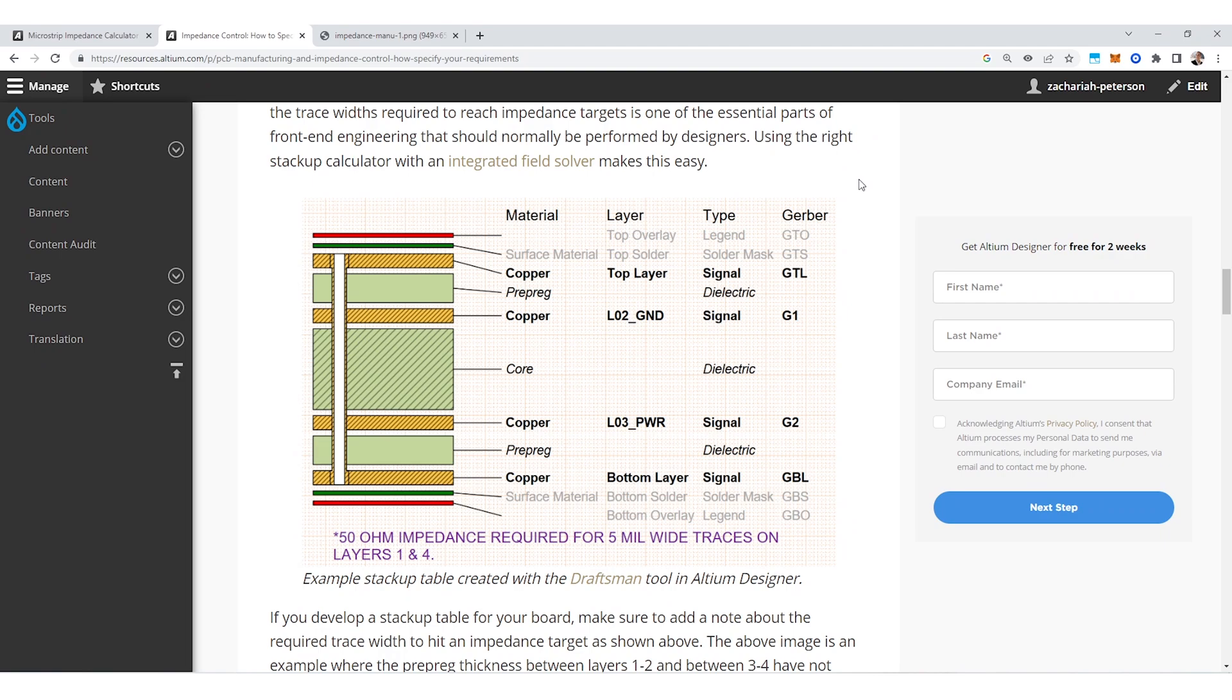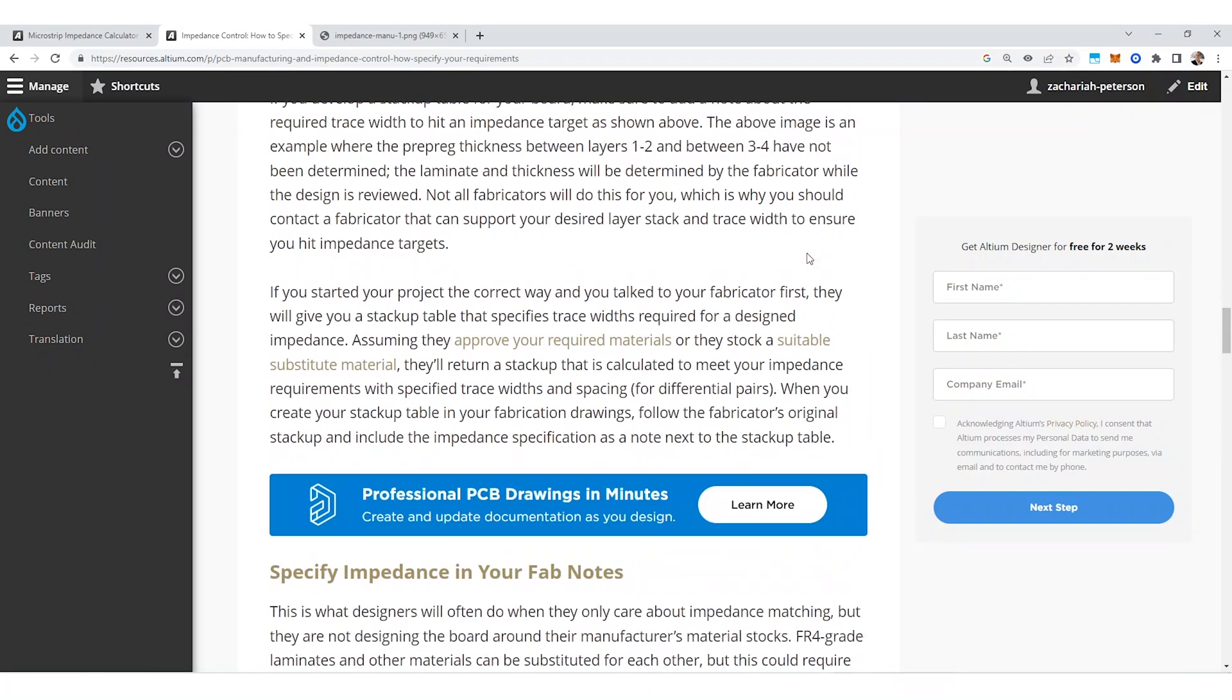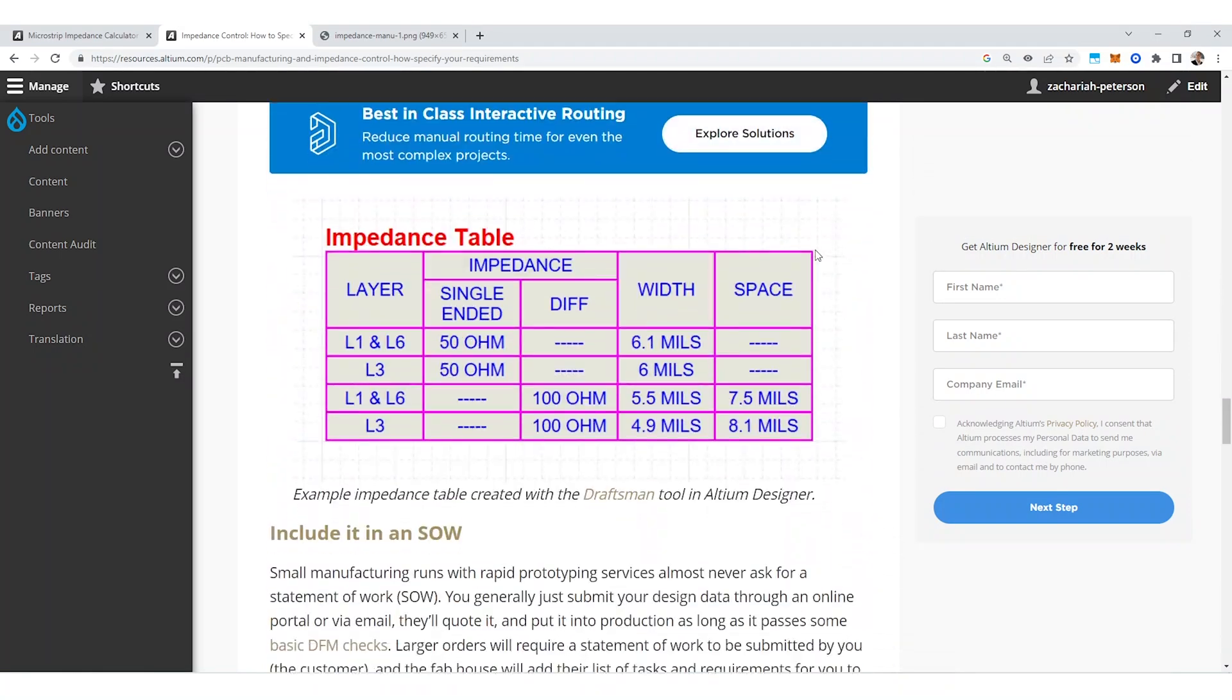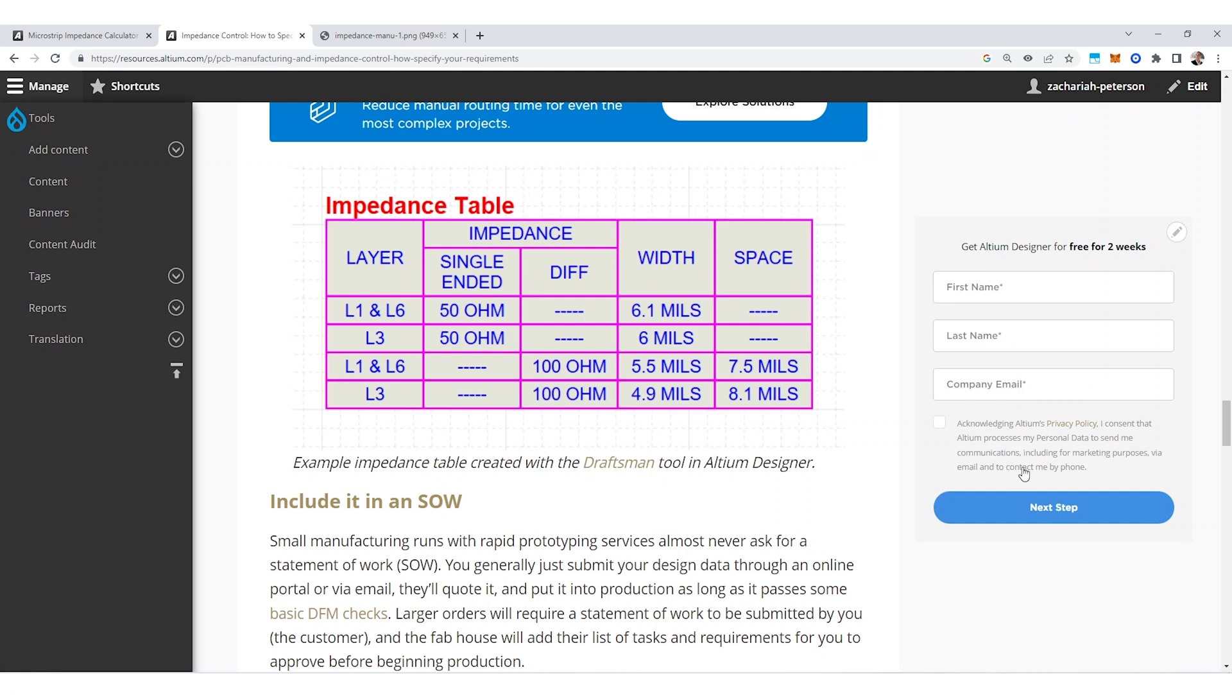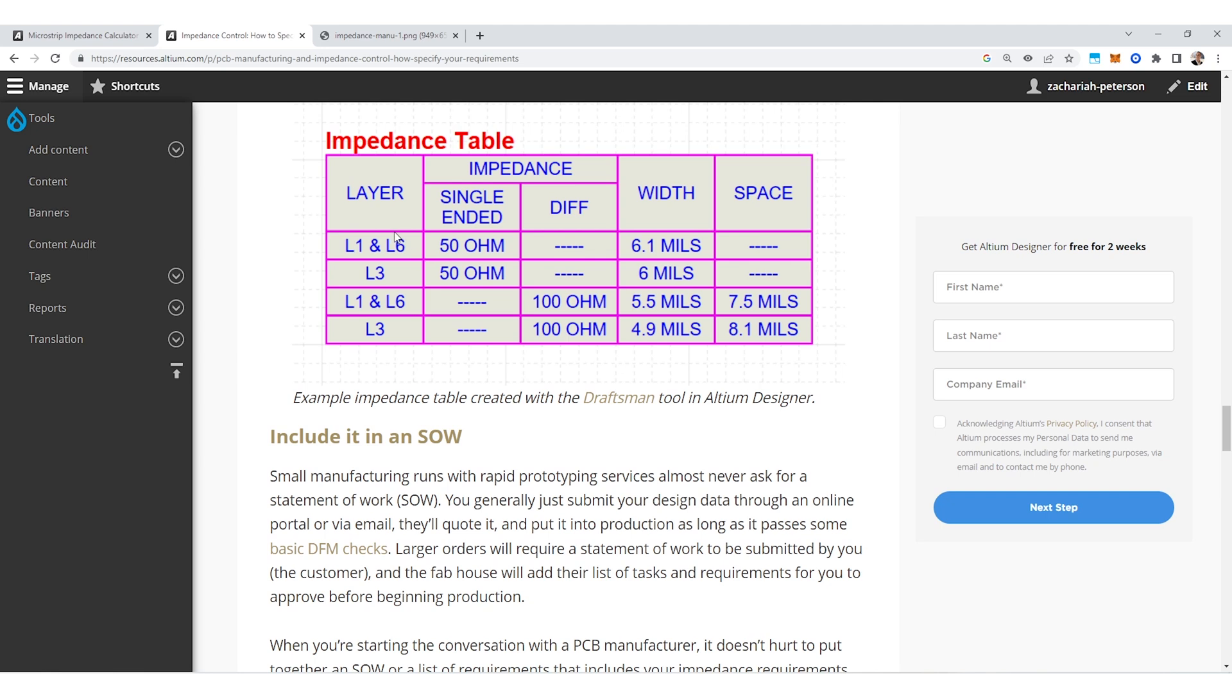Now if I just scroll down here the other thing that I can do is I can create an impedance table. So this is an example impedance table that you see here that kind of looks like what I drew on the whiteboard. So here this impedance table just lists specific impedance targets on my different layers in the PCB. This is what they're going to use for verification when they design your stack-up.